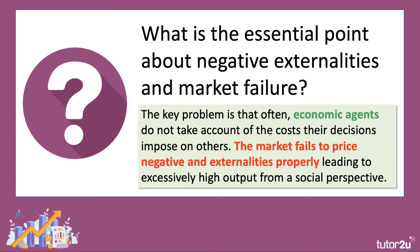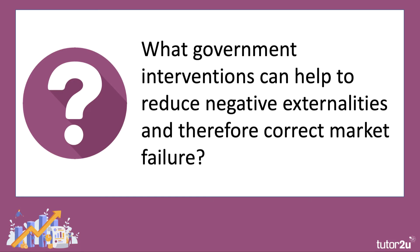Quick reminder from the last video: what is the essential point about negative externalities and market failure? The point is that often in markets, agents — producers, consumers — they do not take account of the costs, the external costs that their decisions impose on others. And therefore the free market price, the price mechanism, fails to price negative externalities properly, leading to excessively high output from a social perspective. Now if you have market failure, there is a case for some form or forms of government intervention.